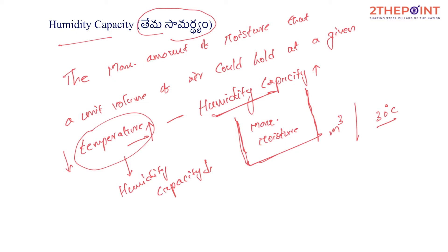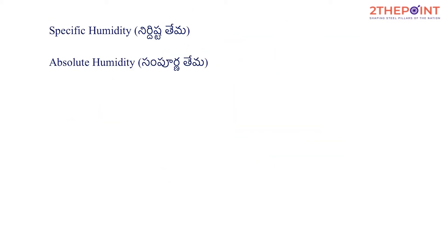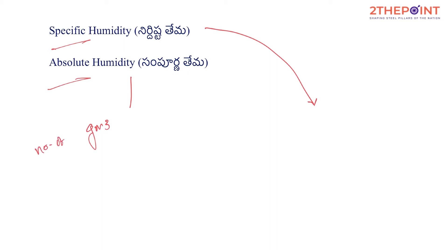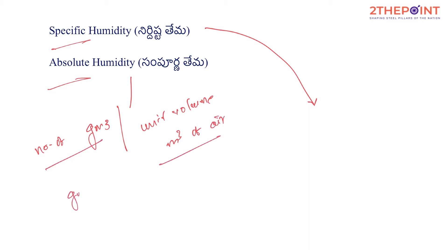When the temperature of the air increases, its humidity capacity and its ability to retain moisture increases. Whereas when the temperature decreases, its humidity capacity decreases. Next, let's cover humidity capacity, specific humidity, and absolute humidity. Absolute humidity is the amount of water vapour in grams present per unit volume — that is, per cubic meter of air.